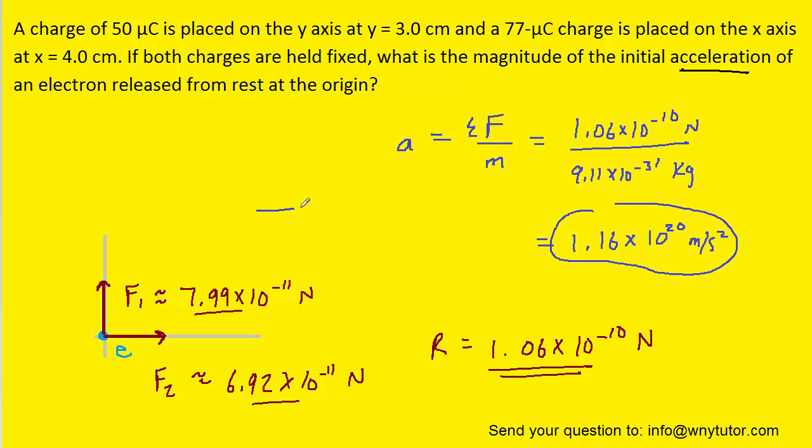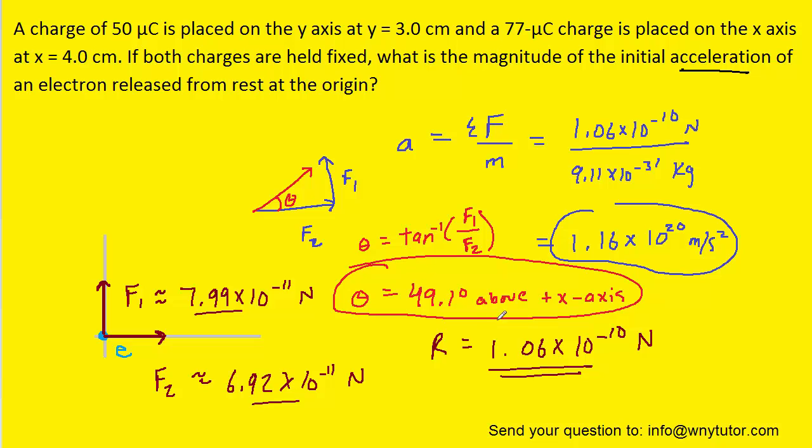If we needed the direction, we could refer back to the triangle we developed earlier. We can find that angle by noting it would be the inverse tangent of the opposite side divided by the adjacent side. We'll plug that into our calculator and get an angle of approximately 49.1 degrees above the positive x-axis.